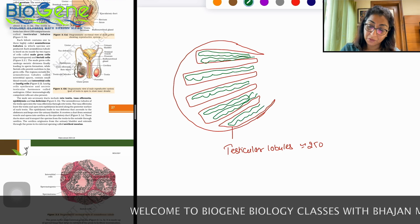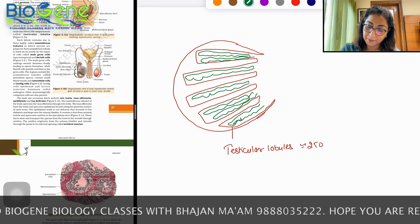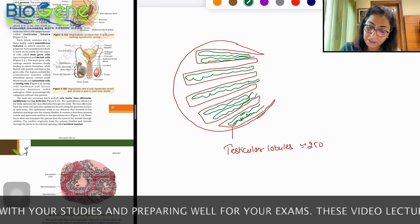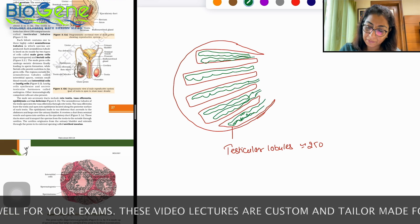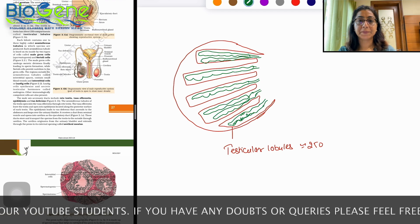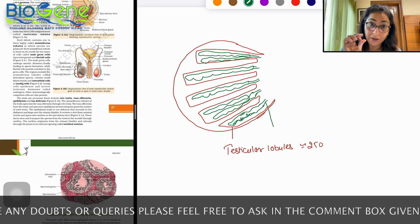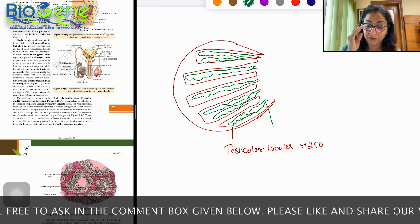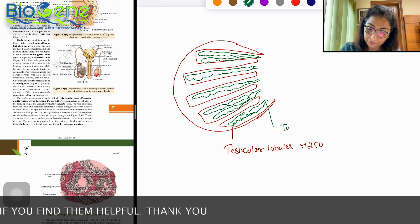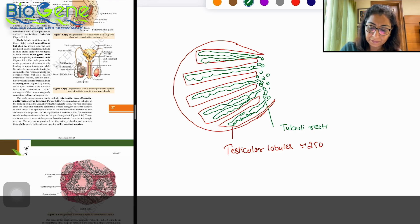These are the seminiferous tubules. Now these seminiferous tubules, they are lined by germ cells and elongated cells, Sertoli cells. These tubules continue into small ducts. These highly coiled structures then form a small straight tubule-like structure. These are called tubuli recti.